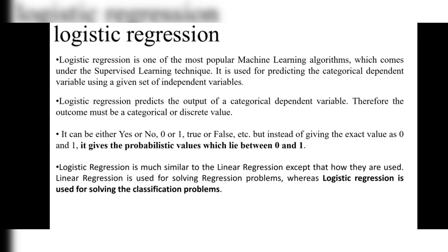Logistic regression predicts the output of a categorical dependent variable, so the outcome must be a categorical or discrete value. It can be either yes or no, 0 or 1, true or false — binary only. It generates binary output, but instead of giving the exact value as 0 and 1, it gives a probabilistic value which lies between 0 and 1.